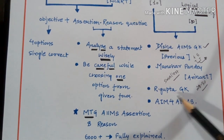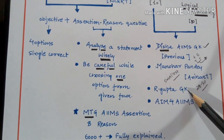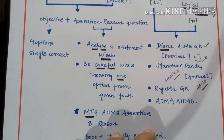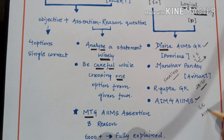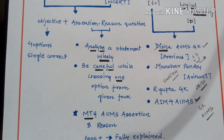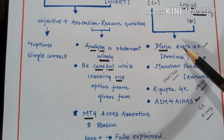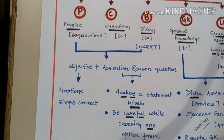Another option is R Gupta Publications GK book, though it is a general book not specifically made for AIIMS. There is also a book called AIIMS for AIIMS, which is specially made for students preparing GK and general aptitude for the AIIMS examination. If you ask me the two best books for AIIMS GK and logical reasoning, I recommend AIIMS for AIIMS and Disha Publications AIIMS GK — both are compact and easy to read.